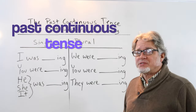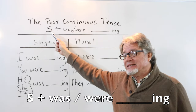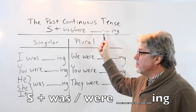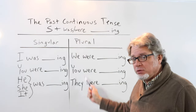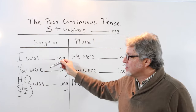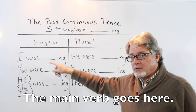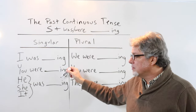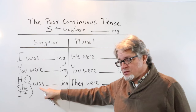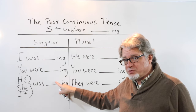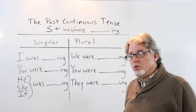To form the past continuous tense, choose was or were depending on the subject, and the main verb has an -ing ending. Singular: I was [main verb]; he, she, it was [main verb]. Plural: you were, we were, they were [main verb].